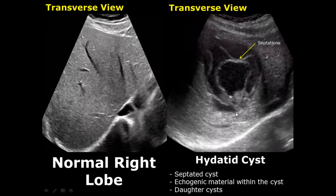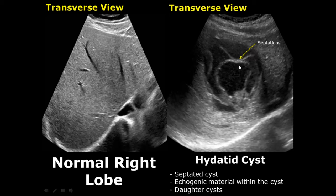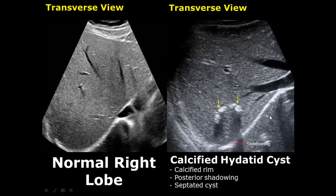A hydatid cyst will have septations — these walls are the septations. They can also have daughter cysts, meaning there could be a cyst within the hydatid cyst. A calcified hydatid cyst will have a hyperechoic calcified rim, which leads to posterior shadowing, and internal septations may also be noticed.